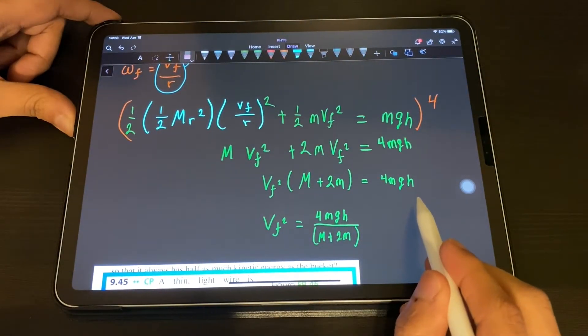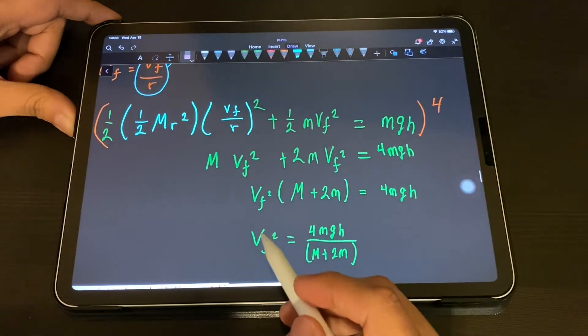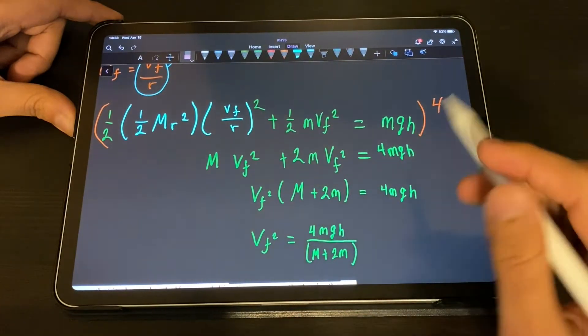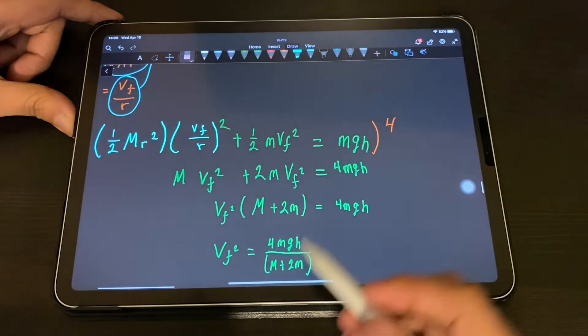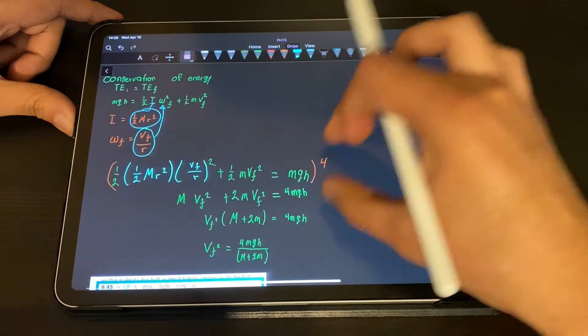But then we have to isolate for the velocity so we get this equation, and there are some things that we still need to find.